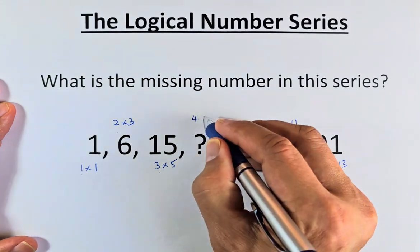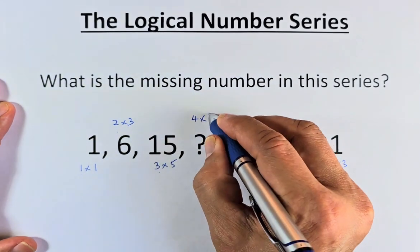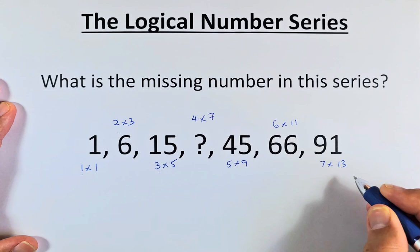And the second number you're going to multiply by 1, 3, 5. That will be 7 followed by 9, 11 and 13.